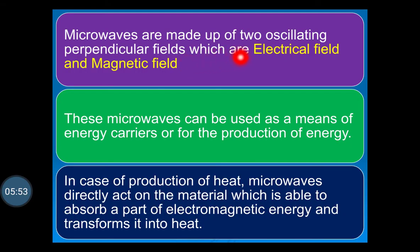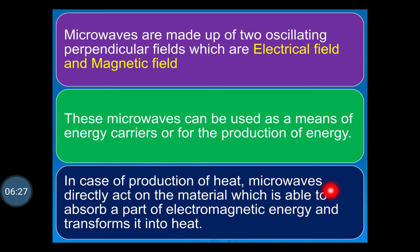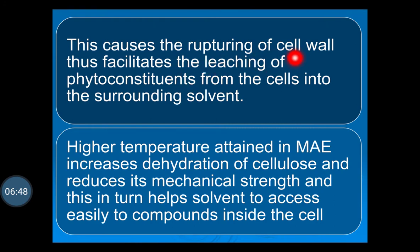Microwaves are made up of two oscillating perpendicular fields: the electrical field and the magnetic field. These microwaves can be used as means of energy carriers to increase temperature or produce energy. In case of heat production, microwaves directly act on the material, which absorbs a part of the electromagnetic energy and transfers it into heat. This causes rupturing of the cell wall, facilitating the leaching of phytoconstituents into the surrounding solvent.